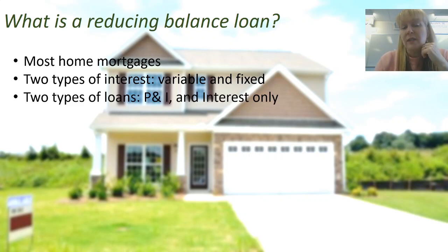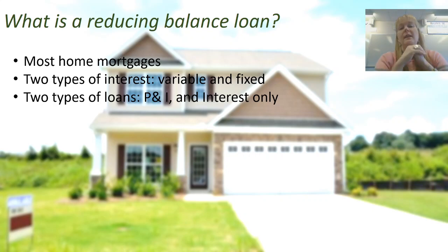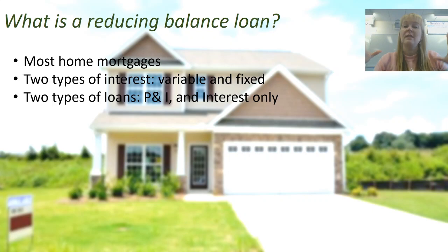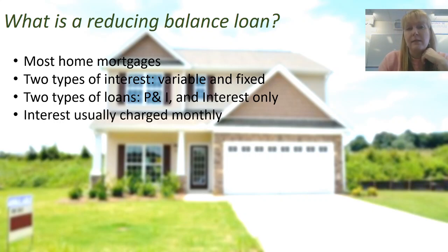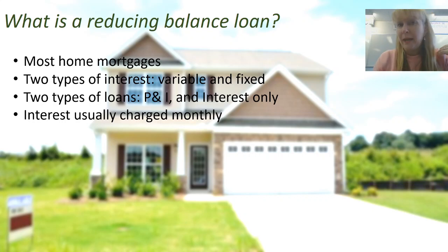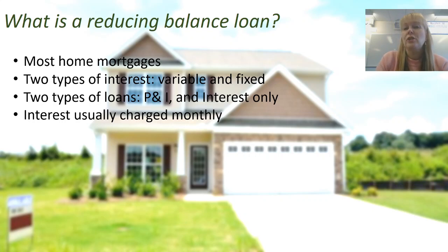There are two types of loans you can take out. One is called a principal and interest loan, which means that with every repayment, you are paying part of the principal and some interest. There are also interest-only loans, where you pay the same amount of interest every single month and the loan balance doesn't reduce. Interest is usually charged monthly, and you can make repayments weekly, fortnightly, or monthly. If you make more frequent payments, you pay off your interest quicker, so you pay less interest in the long term.